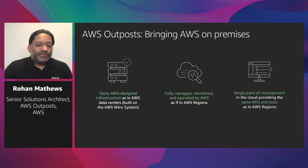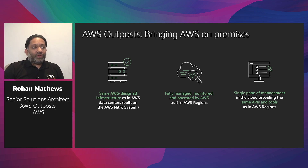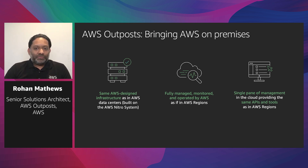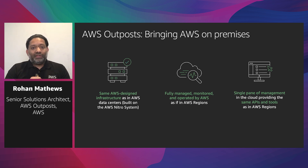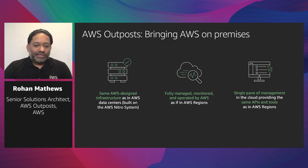The AWS Outpost service brings AWS on-premise. We're taking the exact same infrastructure we run in our regions, built on our AWS Nitro system, and deploying this hardware into customers' premises. The best way to think about it is: I take one of the racks in my availability zone, stick a really long cable on the back of it, and roll it into your data center — which could be a data center you own, a co-location facility, or pretty much any premise that can support the Outpost footprint.